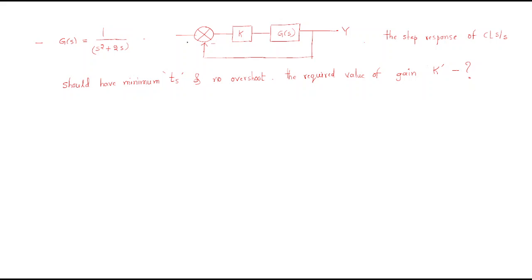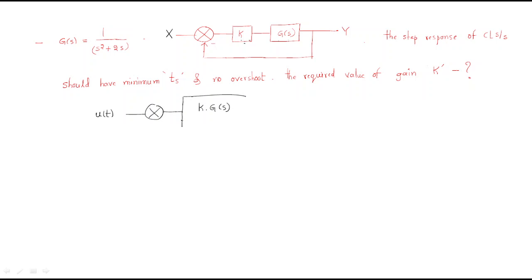The next problem: G(s) = 1/(s²+2s+5) and there is a block diagram with gain K in cascade with G(s), giving the open-loop transfer function K·G(s). The step response of the closed-loop system should have minimum settling time and no overshoot. Find the required value of K.